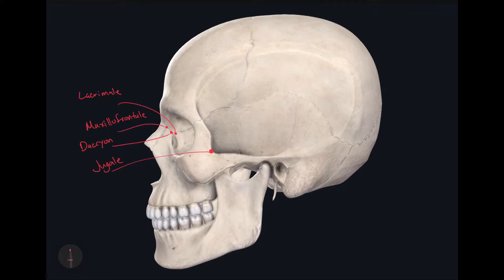The next craniometric point is quite easy to remember and identify. It's located on the condyle of the mandible and this is called condylion — right here. It's found on the most lateral aspect of the condyle.